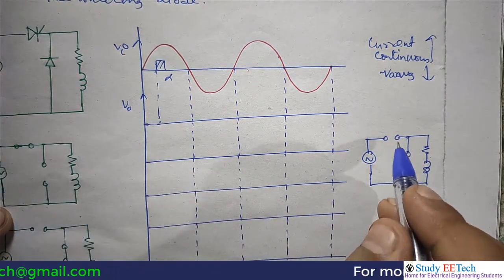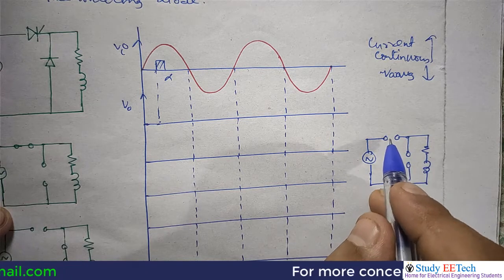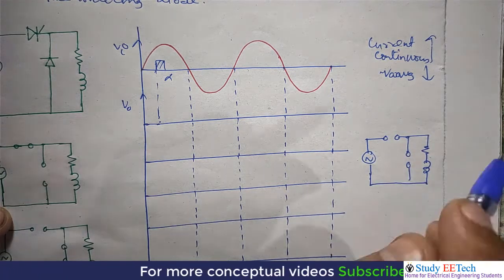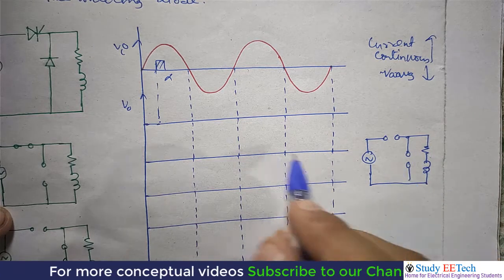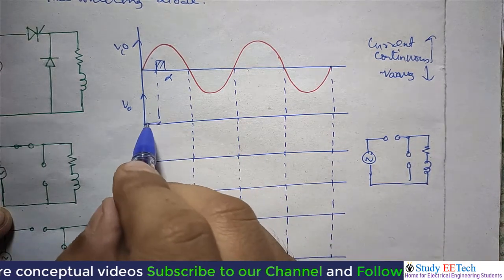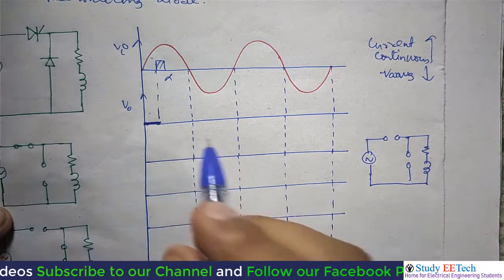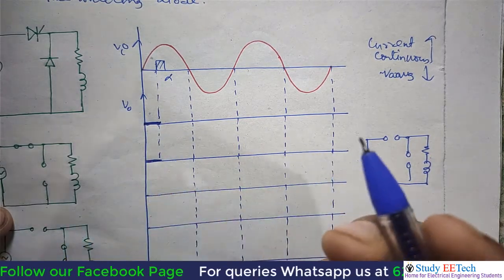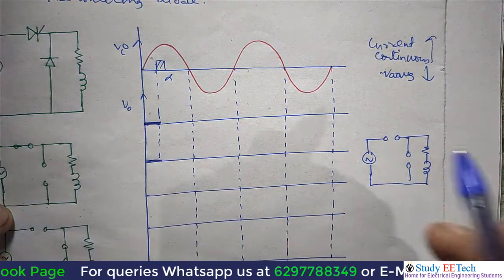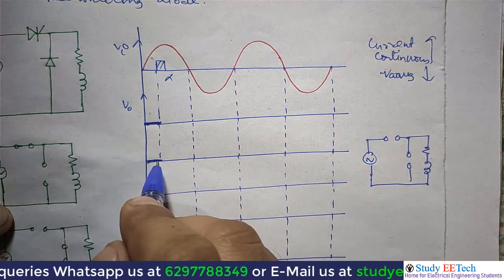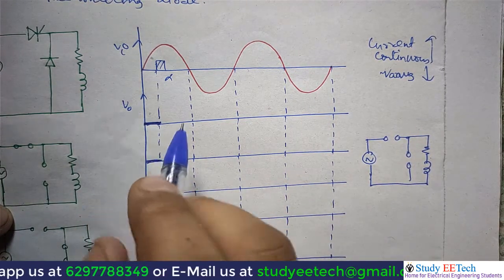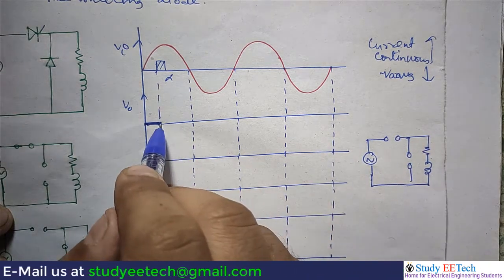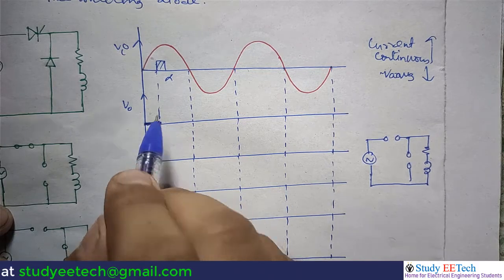From zero to alpha, no switches are on — the thyristor is not triggered and the freewheeling diode is not conducting. So we get zero output voltage. The current is also zero because there is no path for it to flow. Assume current equals zero at this moment, up to the point alpha.